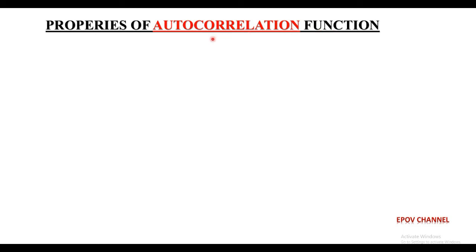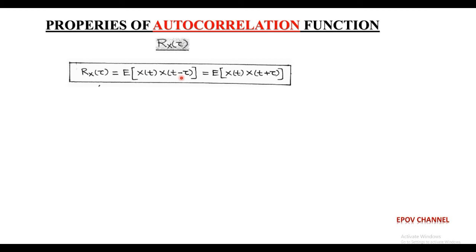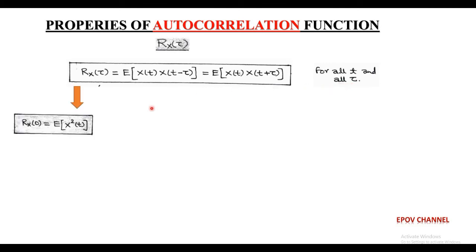Next, we discuss the properties of the autocorrelation function R(tau). The autocorrelation function represents the interdependence of random process X(t) observed tau seconds apart, determined using expectation of the product of X(t) and X(t minus tau) or expectation of X(t) into X(t plus tau), for all values of t and tau. The first property is that the maximum value of the autocorrelation function equals R(0), obtained using expectation of X²(t), which represents the mean square value.